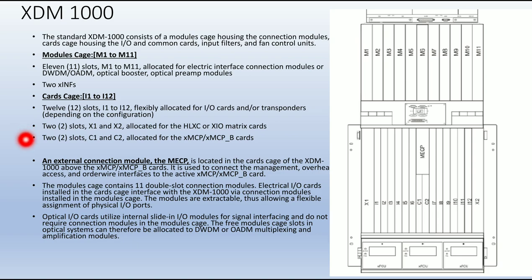Two slots C1 and C2 are for the XMCP card. Above C1 and C2 you can see the MCP card. The external connection module MECP is located in the card cage of the XGM-100 above the XMCP card. It is used to connect the management overhead access and order wire interface to the XMCP card.